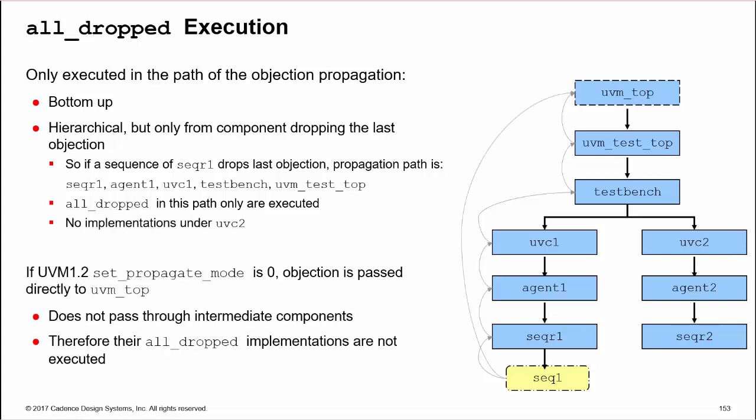Also, if the UVM 1.2 set_propagate_mode feature is set to 0, then objections do not propagate at the hierarchy, but are sent directly from the sequence to UVM top. Therefore, all_dropped implementations in the sequencer, Agent, UVC, TestBench or TestClass are not executed. I suggest you do not want to use the set_propagate_mode if you use all_dropped.